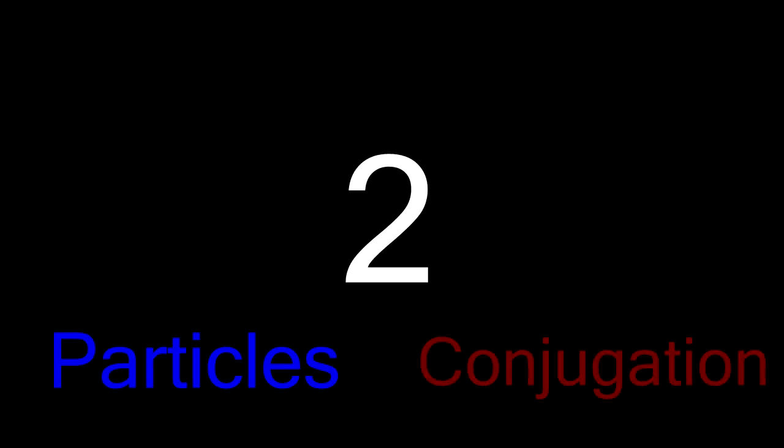Now that you've got some basics under you, including a pretty basic vocabulary list, there are two cornerstones of the Japanese language you absolutely must learn and master in order to get good at it. The concepts are particles and conjugation.